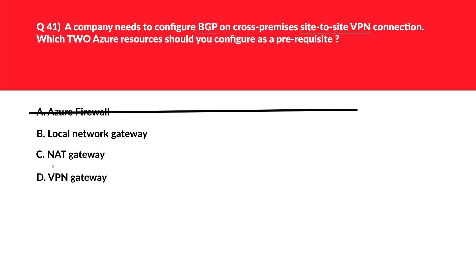Let's look at option C. There is no mention of private subnet, private IP addresses, or NAT instance in the question. Therefore we don't need NAT gateway. This is an incorrect choice.